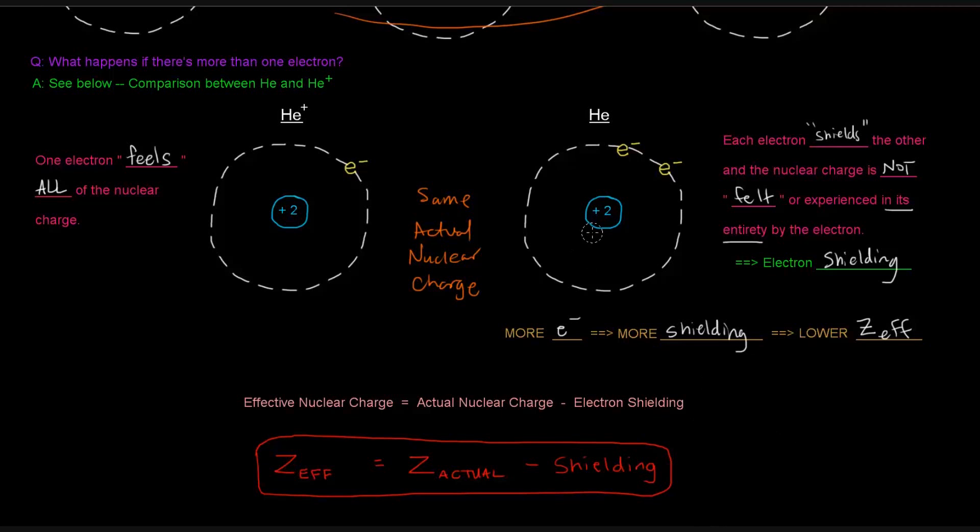So you can kind of think about it as this nuclear charge being dispersed between the different electrons that are floating around it. Whereas in the case where there's just one electron, that electron is feeling every single aspect of that nuclear charge.